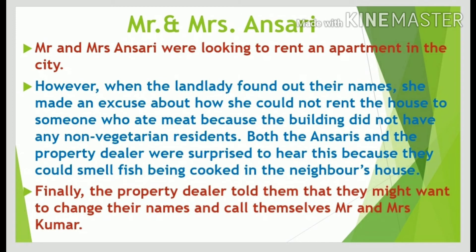The second story is of Mr. and Mrs. Ansari, who were looking to rent an apartment in the city. With the help of a property dealer they visited an apartment, liked it very much and decided to take it. However, when the landlady found out their names, she made an excuse about how she could not rent the house to someone who ate meat because the building had no non-vegetarian residents. Both the Ansaris and the property dealer were surprised because they could smell fish being cooked in the neighbour's house. They visited several other apartments but were refused there too. Finally, the property dealer told them they might want to change their names and call themselves Mr. and Mrs. Kumar. The reason they did not get any apartment was that they belonged to a particular community. These stories clearly indicate that inequality is still faced by many people in India.